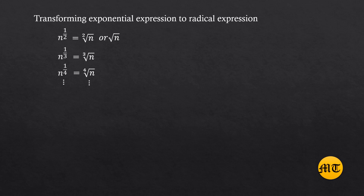That is how to transform an exponential expression to a radical expression when the numerator is one. What if the numerator of the exponent is greater than one? Let us have this example: if n is raised to three over two, then you can write it as the square root of n, in parentheses, raised to three. Or the square root of n raised to three.